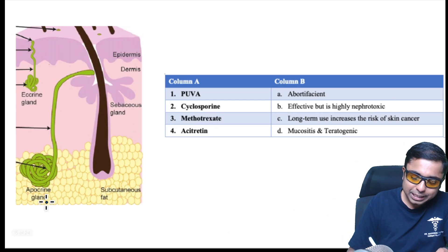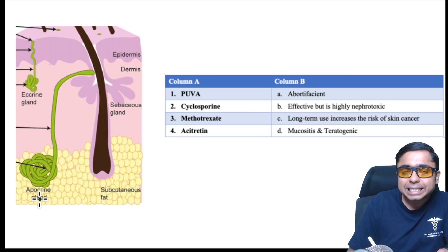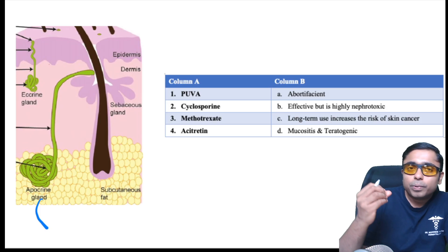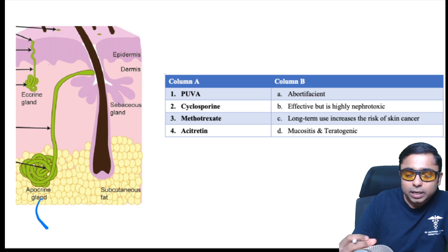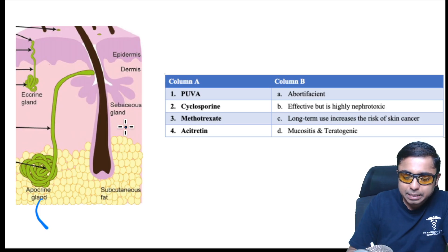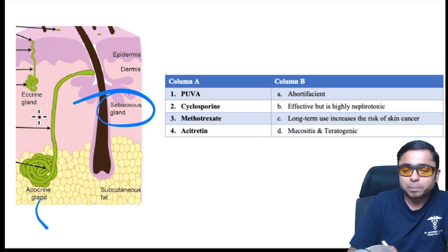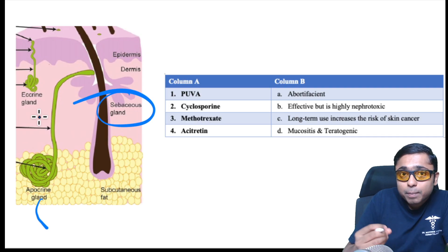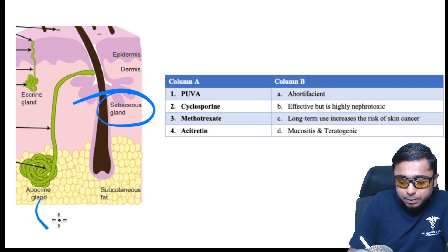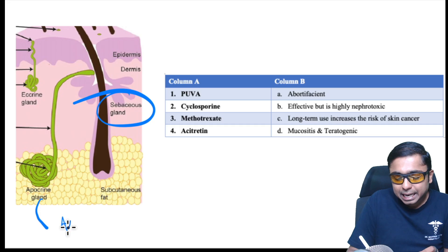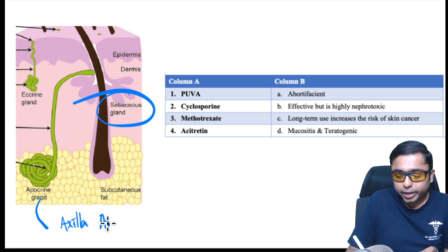The apocrine gland opens into the hair follicle to secrete along the hair follicle, similar to the sebaceous gland. Apocrine glands are present in three locations — remember the mnemonic: axilla, areola, and groin.